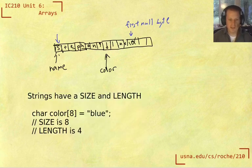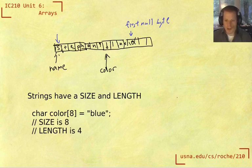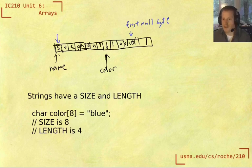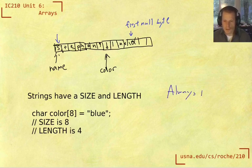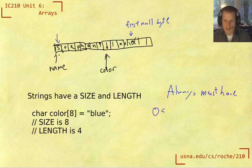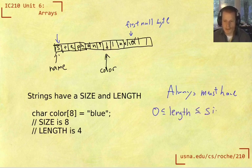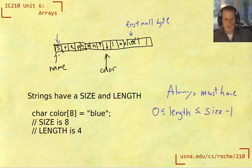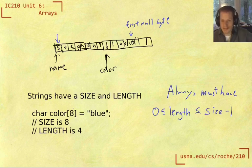And so the last thing to think about is what's the relationship between the size and length of any string. Well for any string, we usually know what the size is because we've declared it. And we might not know what the length is because we read it in from the user or something. But we always must have this relationship is that the length has to be at least 0 and it has to be at most size minus 1. So for this example of color of size 8 or name of size 8 for these arrays, the largest string that we could store in there would be size 7. Why 7 instead of 8 is because we have to have room for that null byte.